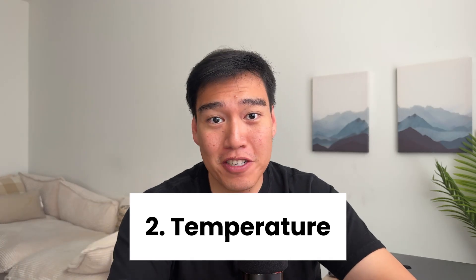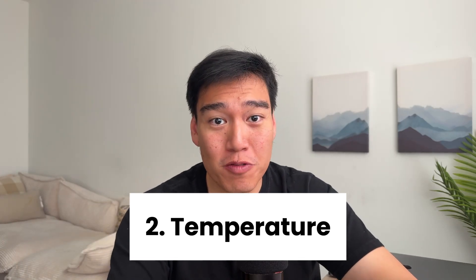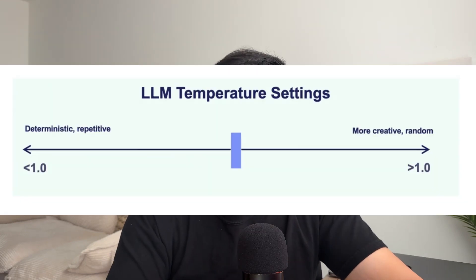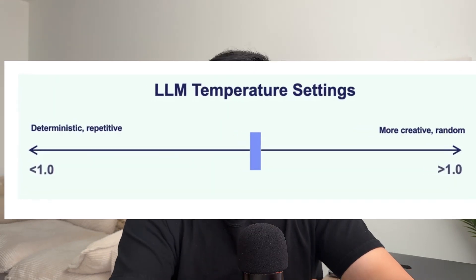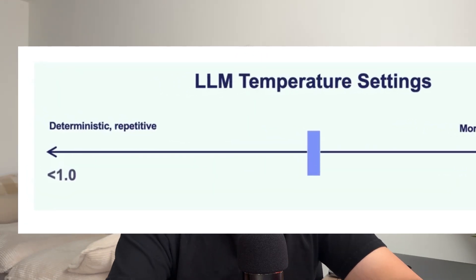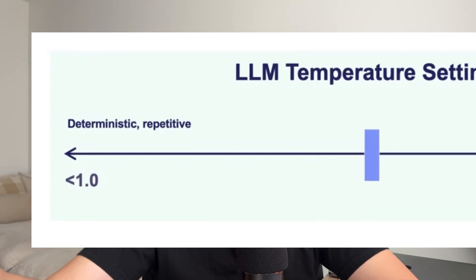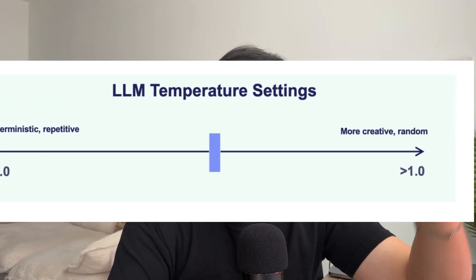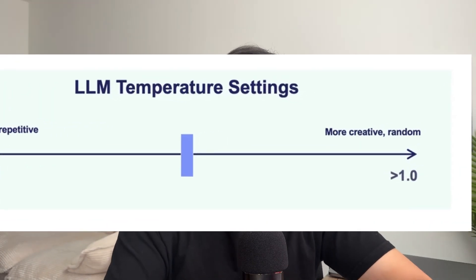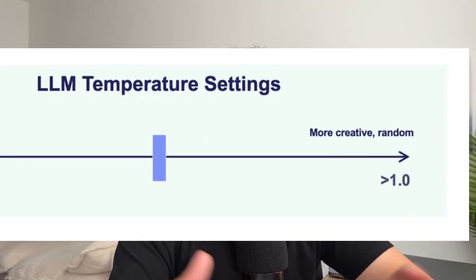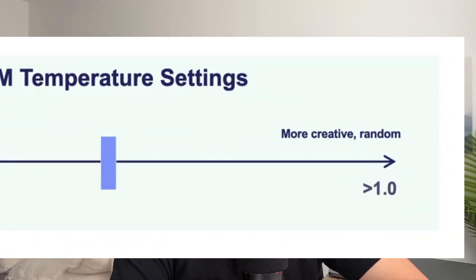The next key setting is temperature, and this controls the randomness of LLMs. If you set the temperature low, like 0.1 or 0.2, you'll get predictable results each time you run the same exact prompt, because the AI chooses the most probable words, which creates consistent outputs. But if you set it higher, you will get more creative answers since there is more randomness in the word selection.